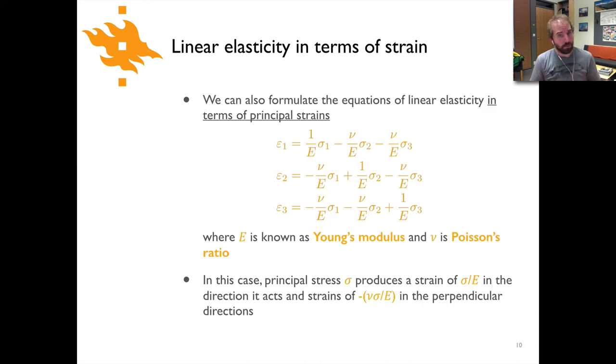We could flip this around and formulate virtually the same thing just with slightly different appearance, and that is the equations for linear elasticity in terms of principal strain. So now on the left side we have epsilon 1, epsilon 2, and epsilon 3, and you can see the principal stresses over here on the right. Now again, here for epsilon 1, we can see that the term out in front of sigma 1 is a little different than those in front of sigma 2 and sigma 3.